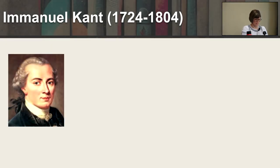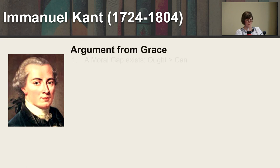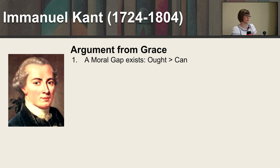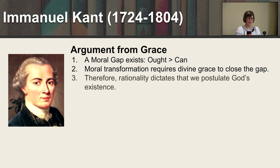Immanuel Kant was a big philosopher who didn't like arguments for the existence of God but loved ethics. He has two arguments. The argument from grace is similar to Aquinas: a moral gap exists between what we ought to do and what we can do; moral transformation requires divine grace to close the gap; therefore rationality dictates that we postulate God's existence.